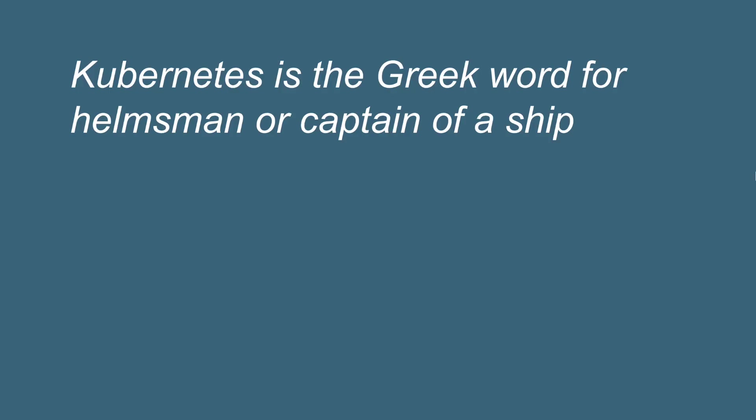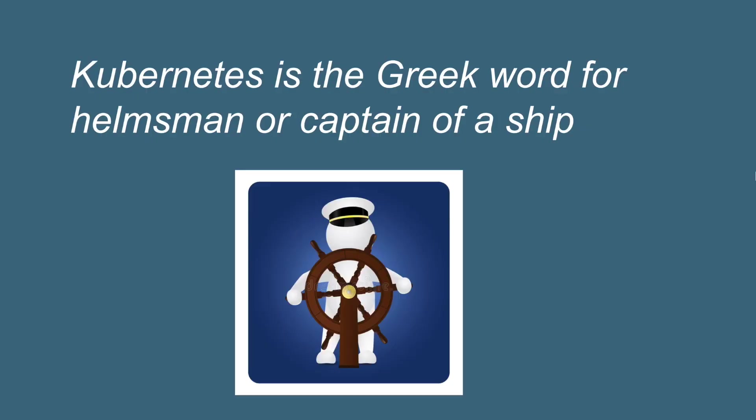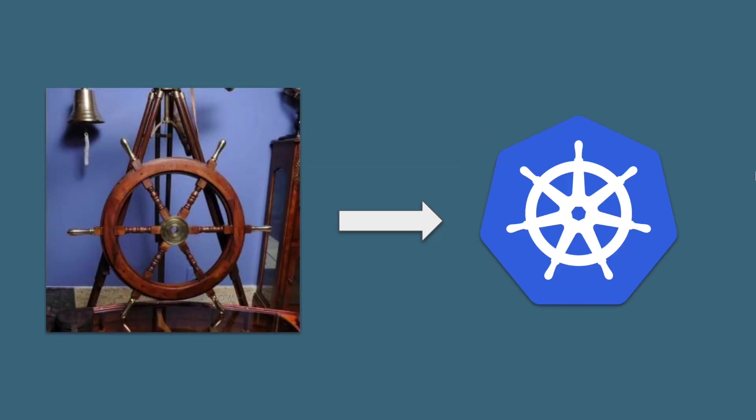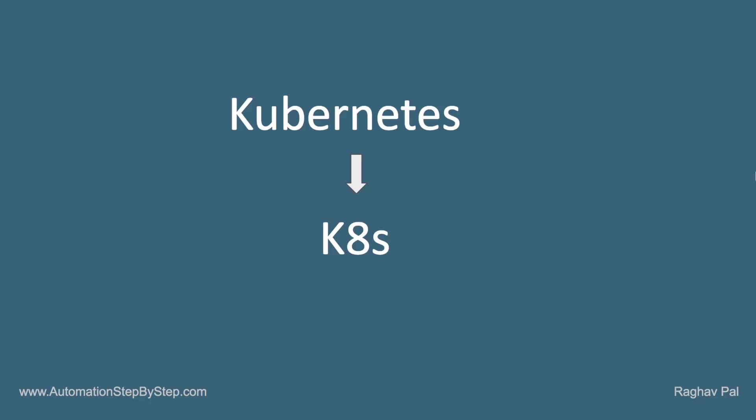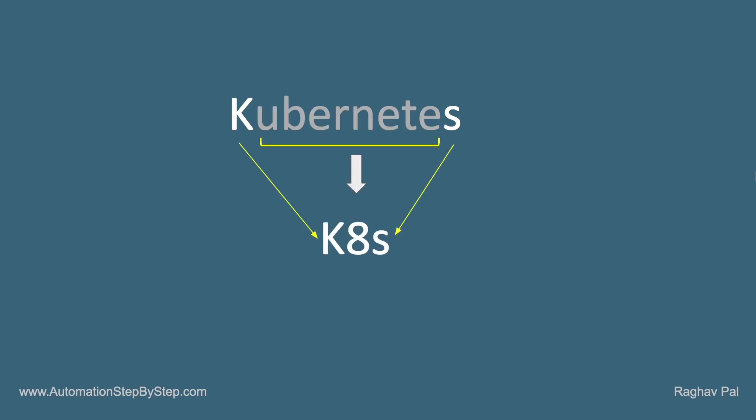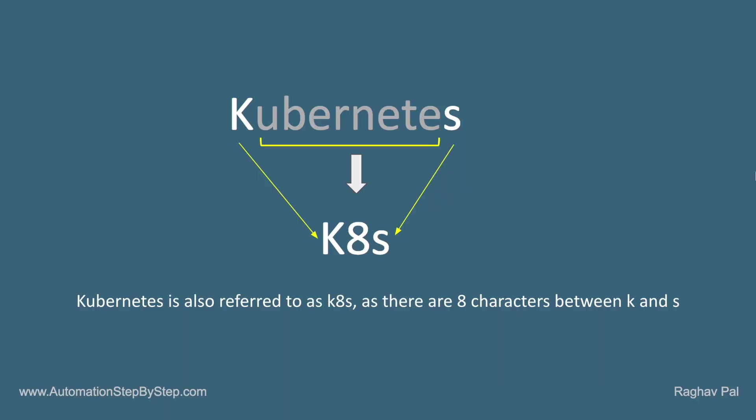Hello and welcome. In this session and in this series, we are going to learn about Kubernetes from scratch. Kubernetes is a Greek word for helmsman or captain of a ship, and if you look at the logo of Kubernetes, it represents the helmsman wheel or the steering of a ship. Kubernetes is also referred to as K8s because there are eight characters between K and S.